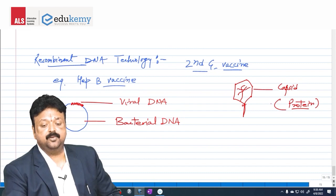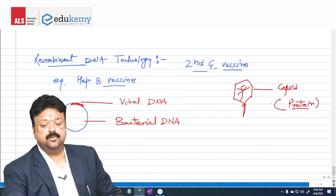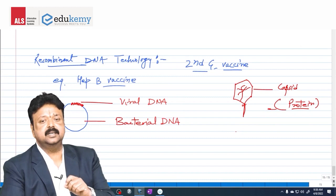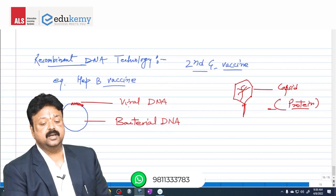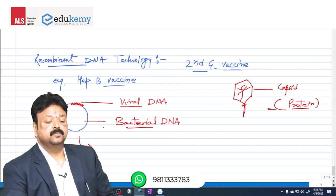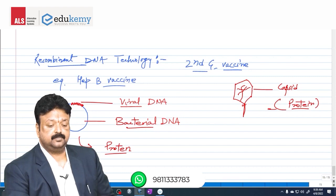Similarly, in virus also, some gene is responsible for making this protein. If a virus comes wearing this protein coat, it will be recognized. Because this gene was ligated - this viral DNA was ligated into bacterial DNA. Now this protein is also produced inside the cell.